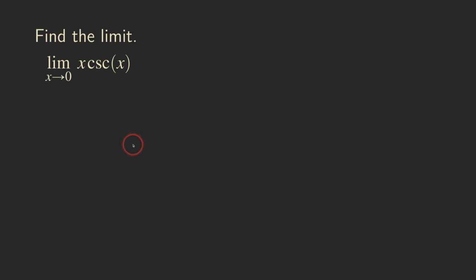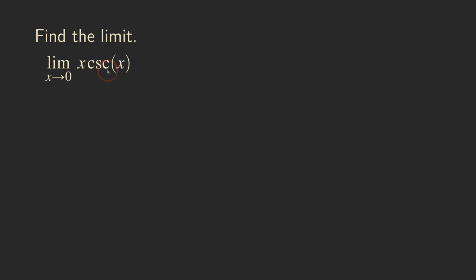Hello everyone, it's Wilson here. I want to talk about this limit problem. As x approaching 0, we want to figure out what this function x times cosecant x is approaching. So how do we find this limit?